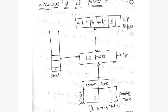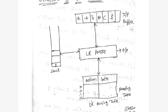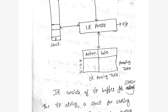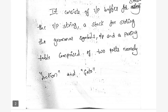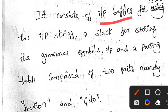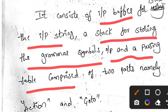The input buffer stores the input string — that is, the expression we are considering. The output is generated by the LR parser. The LR parsing table consists of two parts: the action part and the go-to part. A stack is used for storing grammar symbols, and the parsing table comprises these two parts, namely the action part and the go-to part.